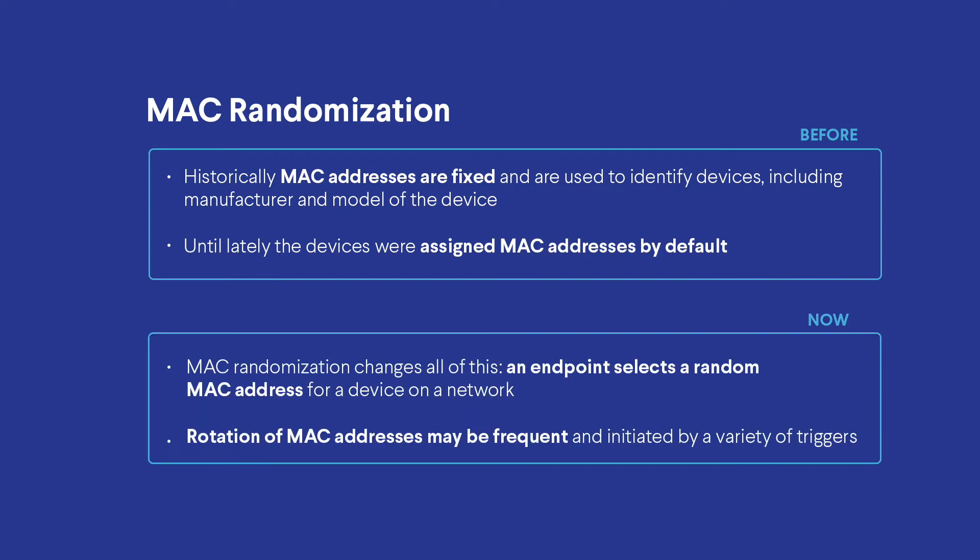MAC randomization changes all of this. MAC randomization is a process in which the endpoint device itself selects a random, unpredictable MAC address for use when connecting to the network, and it rotates this MAC address once per day or more frequently. There are many other triggers to change the MAC address as well.